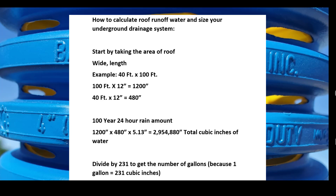So let's get started. You start by taking the area of the roof, and I'm going to use an example. Say I have a rooftop and it's 40 feet by 100 feet. Because rain in the United States is measured in inches, everything has to be done in inches — you need consistency. So I take 100 feet and convert it: 100 × 12 = 1,200 inches. We do the same with the 40 feet: 40 × 12 = 480 inches.